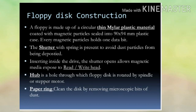A floppy disk is made up of circular thin mylar plastic material created with magnetic particles. Every magnetic particle holds one bit. The shutter with spring is present to avoid dust particles from being deposited.